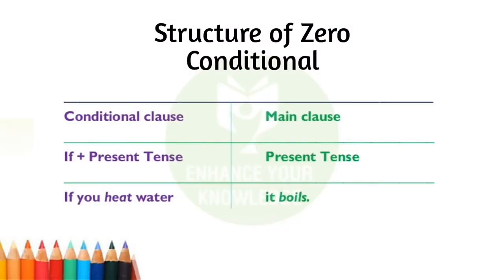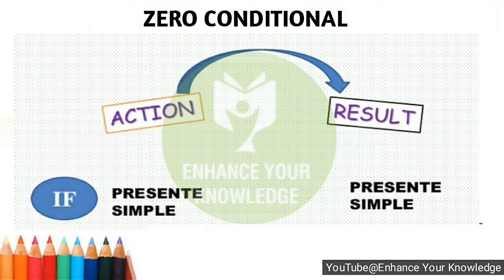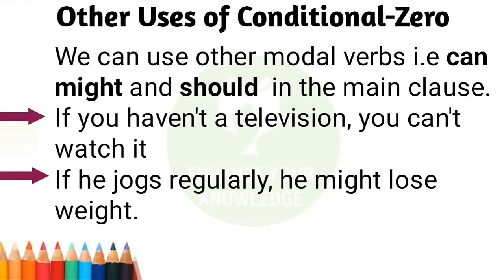When we talk about its structure, it is one of the easiest to remember because both clauses are in the present simple. The tense in the if-clause is present simple and the tense in the consequence clause is also present simple. This is because whenever we talk about habitual actions, routines, facts, or universal truths, we always use the present simple tense.